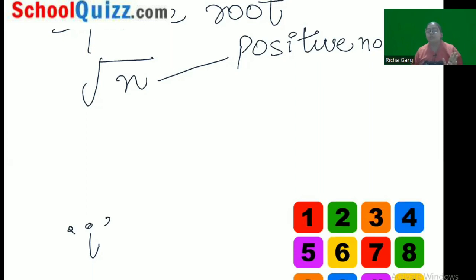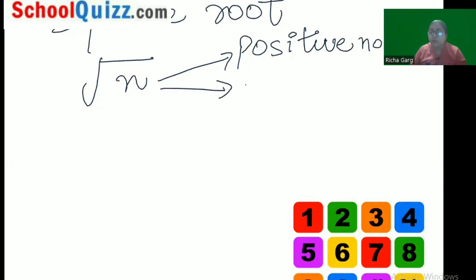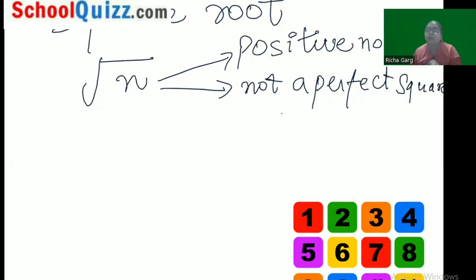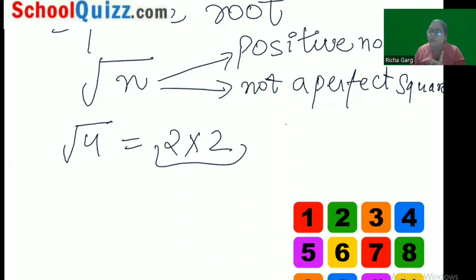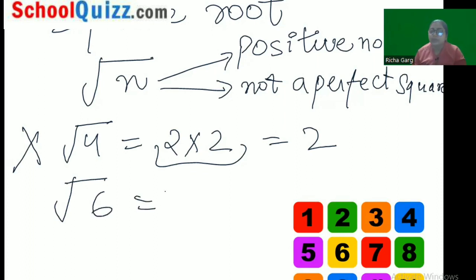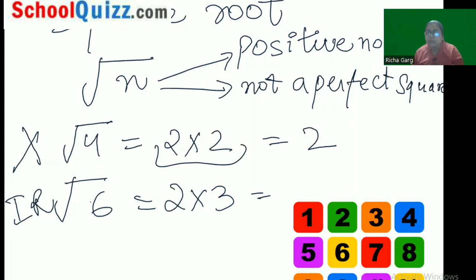We are focusing on irrational numbers for now, so n must be a positive number. The second condition: it must not be a perfect square. A perfect square is one where the factors can be taken in pairs of 2 with no number left behind. For example, 4 = 2×2, so its square root is 2 — it is a perfect square, and therefore not irrational. But 6 = 2×3 has no pair of 2, so it is not a perfect square, making √6 an irrational number.